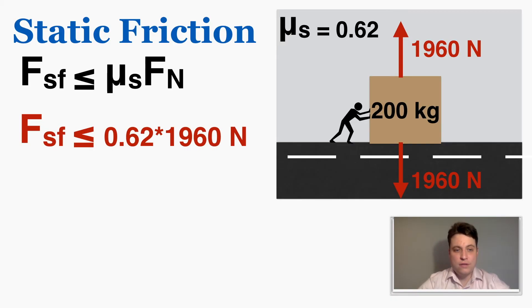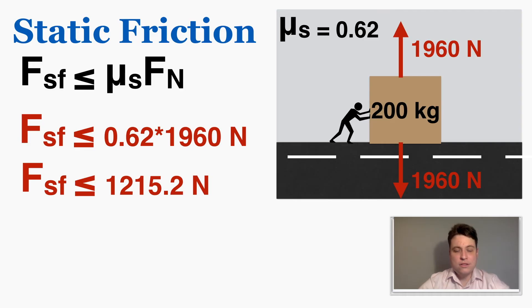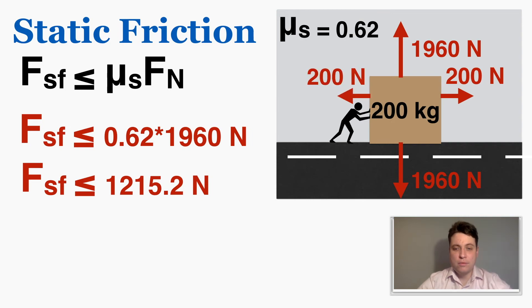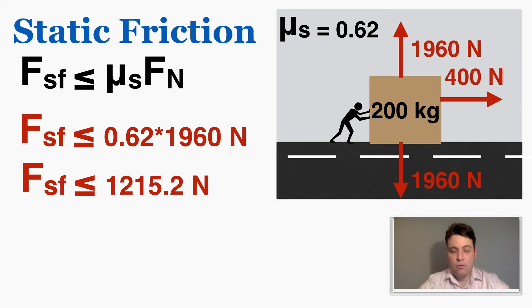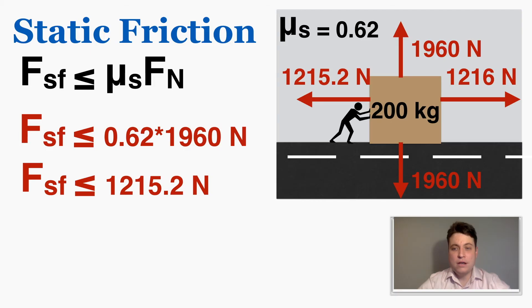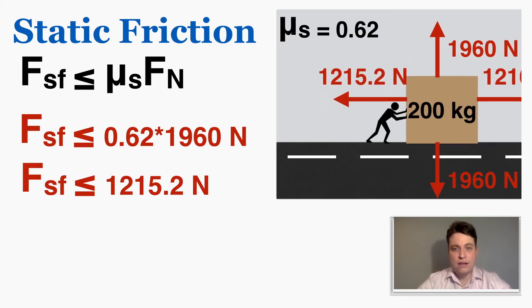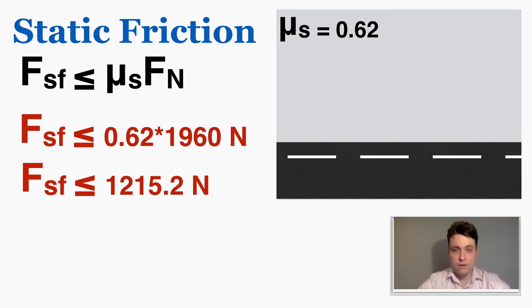The force of static friction is always less than or equal to 0.62 times 1,960, which equals 1,215.2 newtons. This is the maximum amount static friction can push back before the box begins to move. If you push with only 200 newtons, static friction easily pushes back 200 newtons, keeping the box still — well below the 1,215 newton maximum. Once you push with more than the maximum static friction, the object begins to accelerate, and static friction no longer applies — a different type of friction takes over.